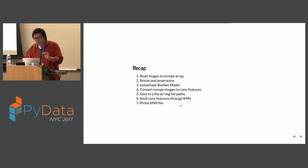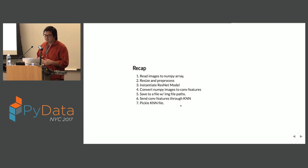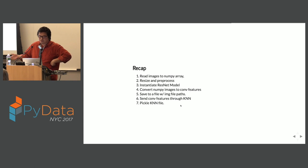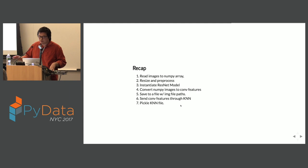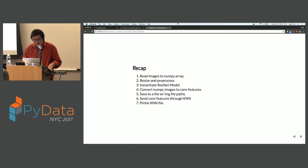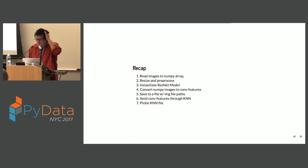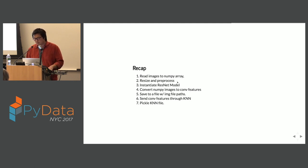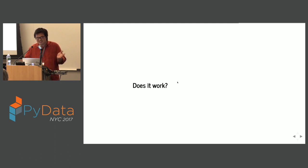Let's recap everything that happened. In Python, you read images to a NumPy array, resize and pre-process them, create a ResNet model, convert the NumPy images to convolutional features, save those along with file paths into a CSV, then send those convolutional features to train K-Nearest Neighbors, and pickle that. It's available on GitHub — about 140 lines of code — and you can input any list of images you want.